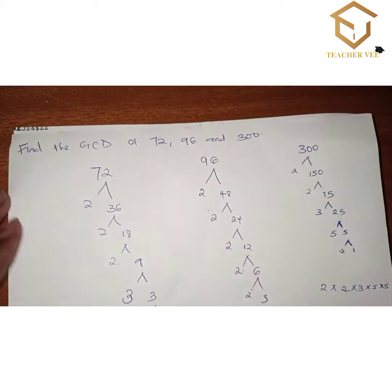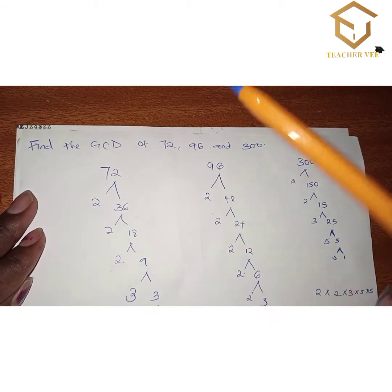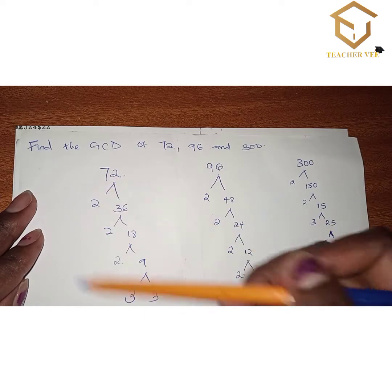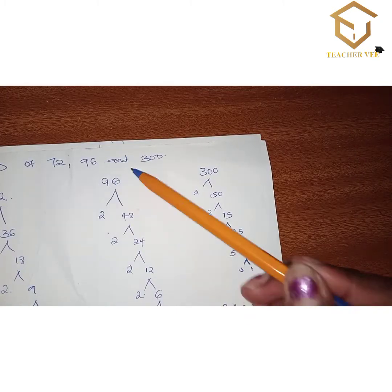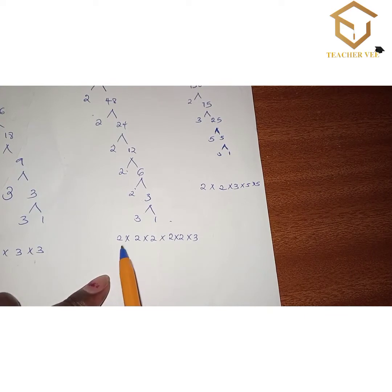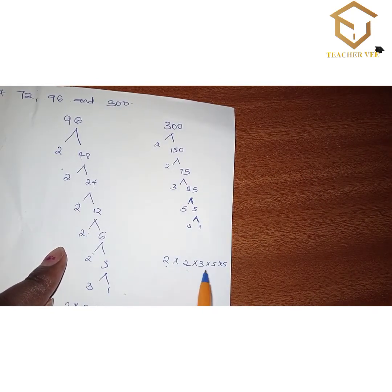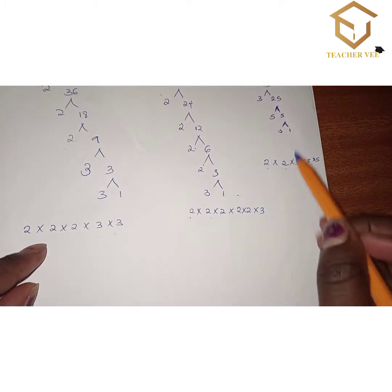I came up with a solution whereby first of all I had to do the prime factorization of each number. For 72, the factorization is 2 × 2 × 2 × 3 × 3. For 96, the factorization is 2 × 2 × 2 × 2 × 2 × 3. For 300, the solution is 2 × 2 × 3 × 5 × 5.